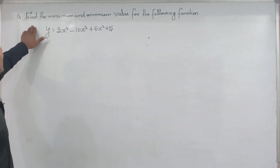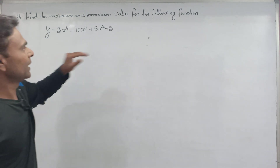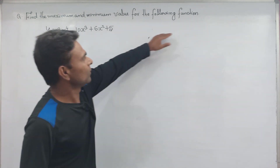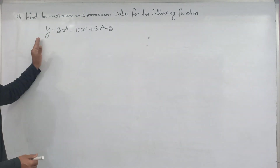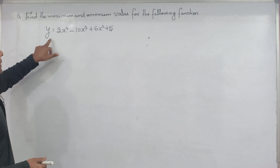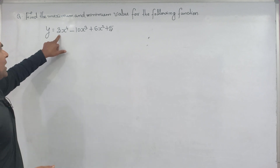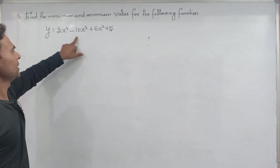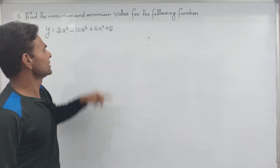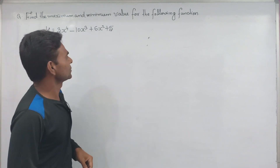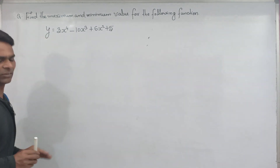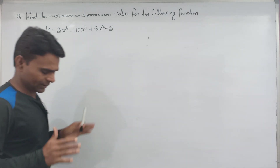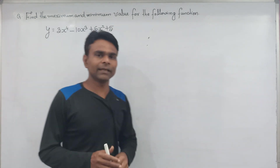Find the maximum and minimum value of the following function. The function given is y equal to 3x to the power 4 minus 10x to the power 3 plus 6x square plus 5. This is your given equation.